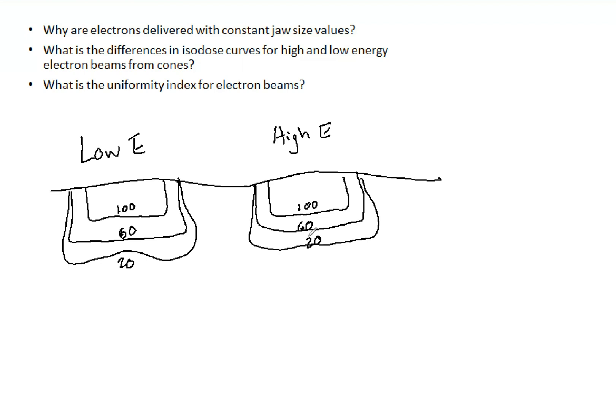So finally, what is the uniformity index for electron beams? This quantifies the amount of penumbra in the electron beam. It's the area of 90 percent isodose line to the 50 percent isodose line.